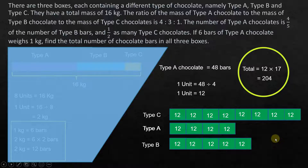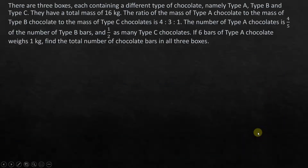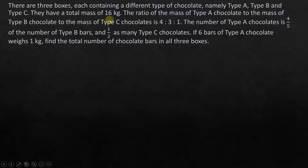Now let's move on to solving the same problem using algebra. For those who just joined, I'll read the question once more. There are three boxes each containing a different type of chocolate — type A, type B, and type C — with a total mass of 16 kilograms. The ratio of the mass of type A to type B to type C is 4:3:1.